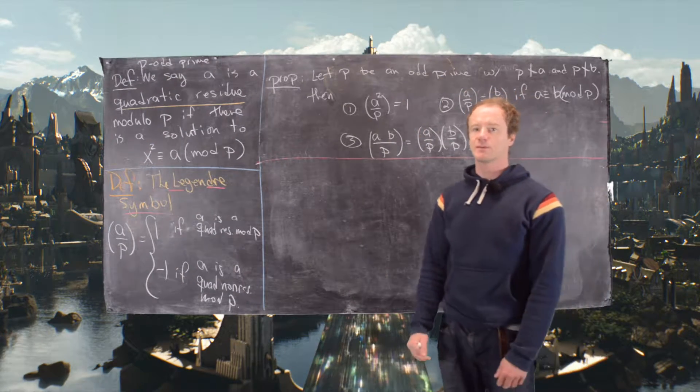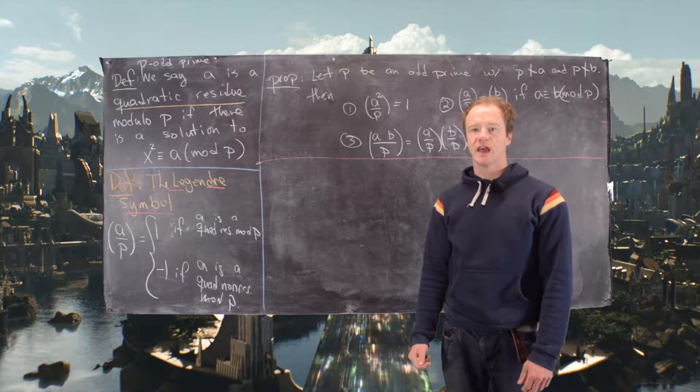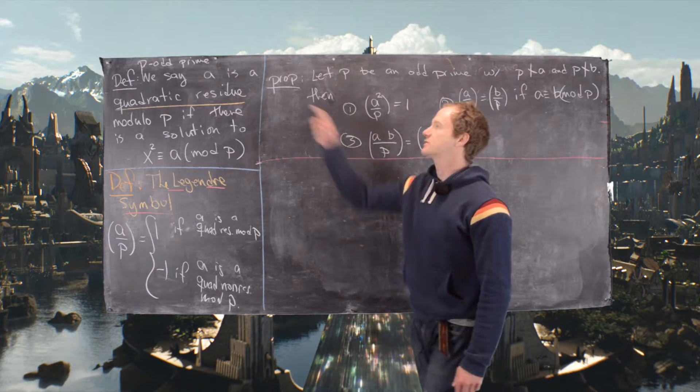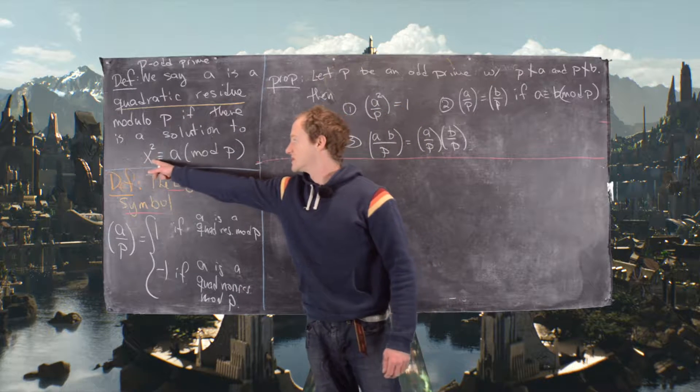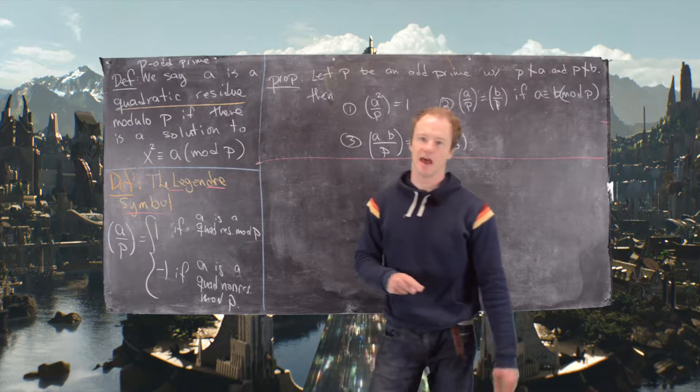Okay, in this video we're going to look at some properties of quadratic residues and the Legendre symbol. Let's recall that a is a quadratic residue modulo p if there's a solution to this equation: x squared is congruent to a mod p.